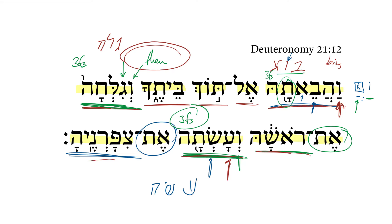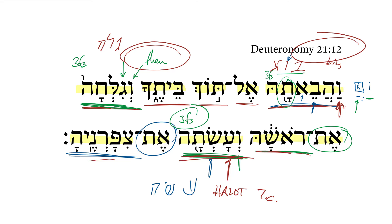With asa here, Halot section 7c actually lists this verse as 'to make ready' or 'to prepare.' So it sounds funny to say 'and do her nails,' which is kind of the way we might think about it, but here it would be something more like 'to prepare' or 'to make ready,' or even 'to cut her nails.'